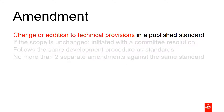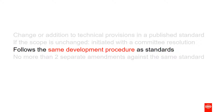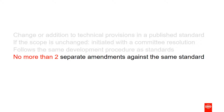Amendments are used for changing or making additions to the technical content of published standards. They can be initiated by a committee resolution, as long as there is no change to the scope of the document. Like a revision, the development procedure is the same as for a standard. But you can't keep amending standards forever. Amendments are published as separate documents to be used alongside the existing parent standard, so any more than two amendments would make the original document quite hard to use. If you have a document that needs to be amended a third time, then you would instead initiate a revision.